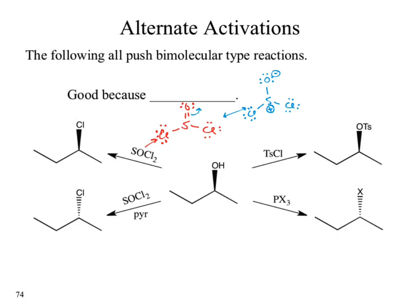Anybody notice anything bizarre about that chemistry for the upper left one? It's not a backside attack. What mechanism does backside attack? SN2. So it's not backside attack, meaning it's not SN2. What does SN1 do? Both faces — but how many products did I draw? One. So it's not SN1 either. What is it? It does it all at once with retention of stereochemistry. Underneath that is the same reagent — SOCl2 — but it added an extra little piece: pyridine. That extra piece changes the mechanism and we get SN2 with a backside attack and inversion of stereochemistry.